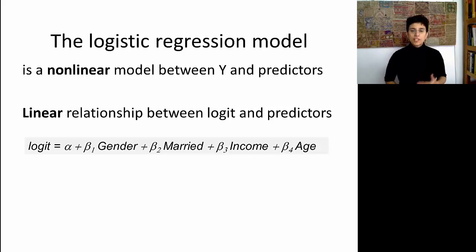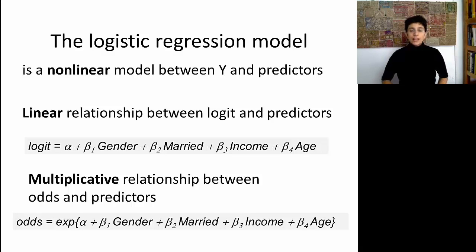So just to revisit the formula, we're talking about a relationship between the predictors and a transformation of our outcome that's called the logit. And the logit is a nonlinear function of the y. In particular, it looks at this concept called the odds, which is a function of the probability of the class of interest. And then we take a log odds, which gives us the logit.